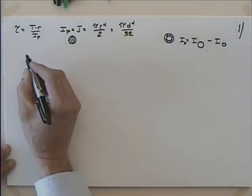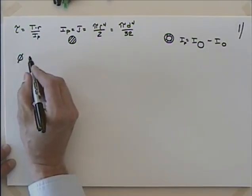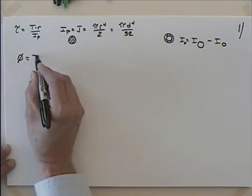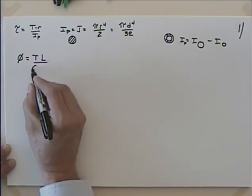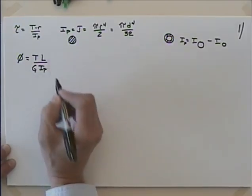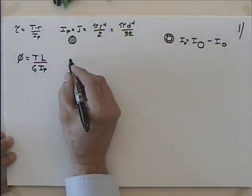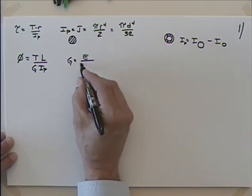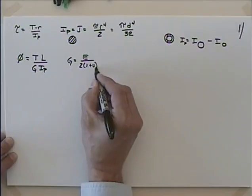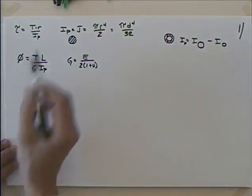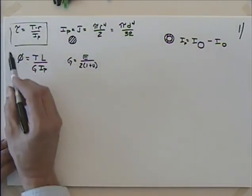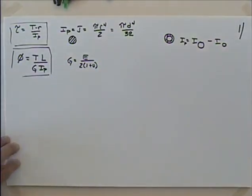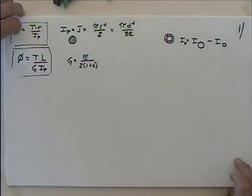Then we get into angle of twist, where the angle of twist of a shaft under torsional loading is equal to the torque times the length divided by the shear modulus G times the polar moment of inertia. Remember that G is equal to Young's modulus divided by two times the quantity one plus Poisson's ratio. In both of these equations, you have to be very careful of the units, because the torque has to be in pound-inches, and the length in inches.